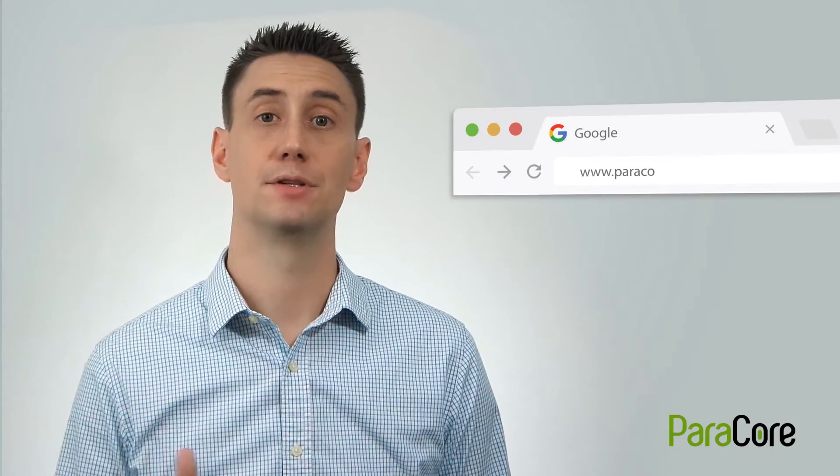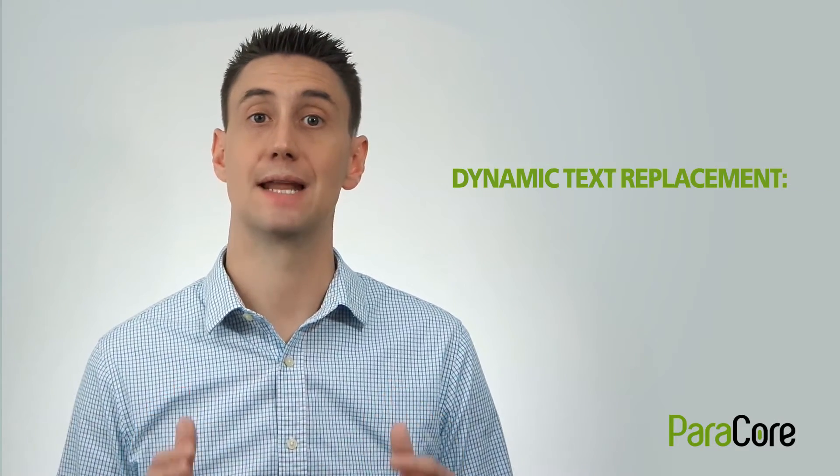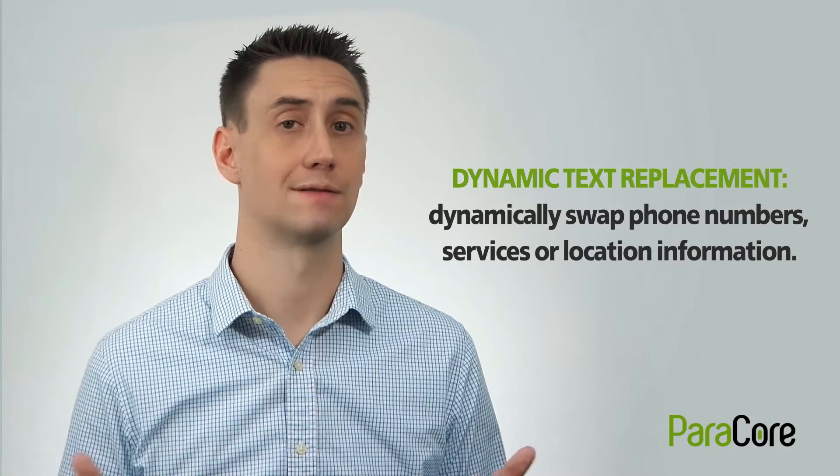There are some additional, more subtle features available with Unbounce. You can set up root domain landing pages using the WordPress plugin. These landing pages can render on your root domain, for example, www.paracore.com/ppcoffer. There's also the option of dynamic text replacement, which lets you dynamically swap phone numbers, services, or location information. This way, you can use the same landing page for dozens of variations.